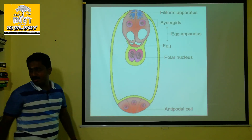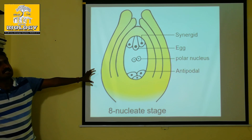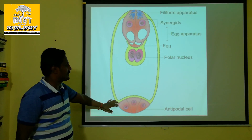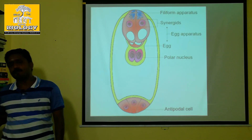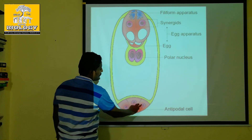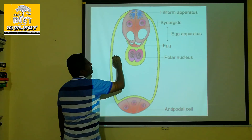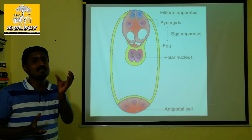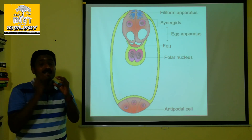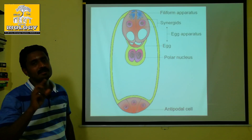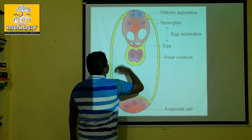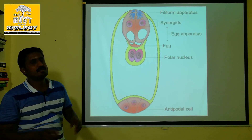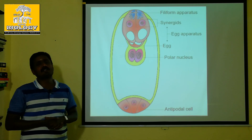This is a synergid, fully developed. If you have a diagram, there is a development. It has been completely developed. This is the antipodal end — from the polar nucleus. This is the most important one. This is the micropylar end, and at the micropylar end, the egg is present. In the ovule, there are many types — Anatropous and Orthotropous. This is the type of micropylar end, where the region is located.